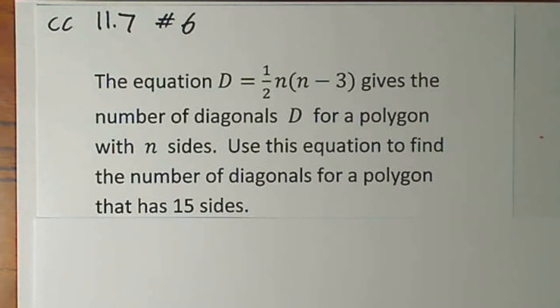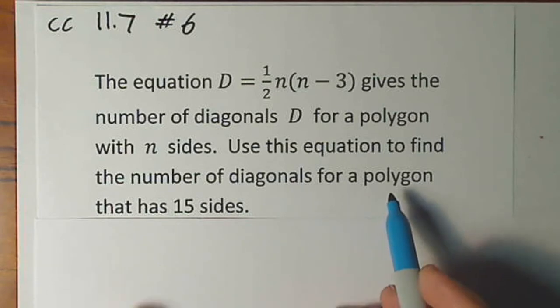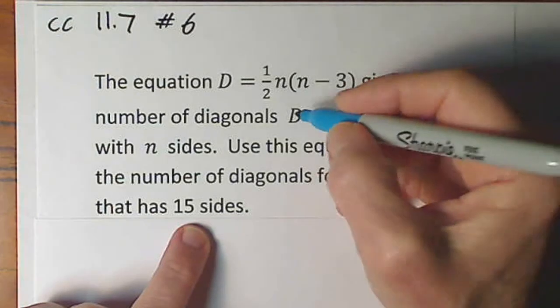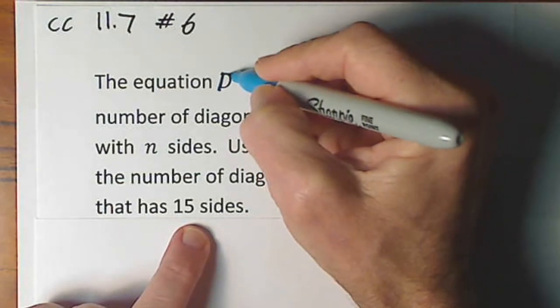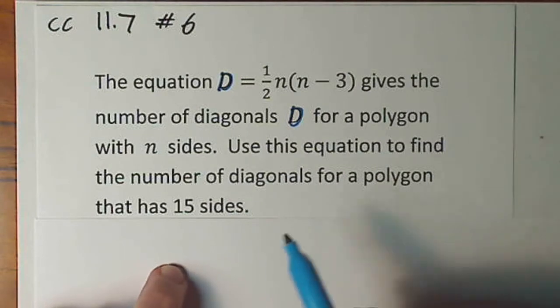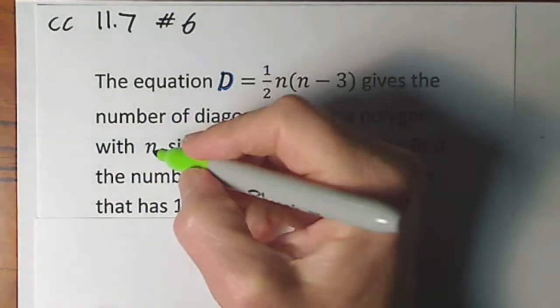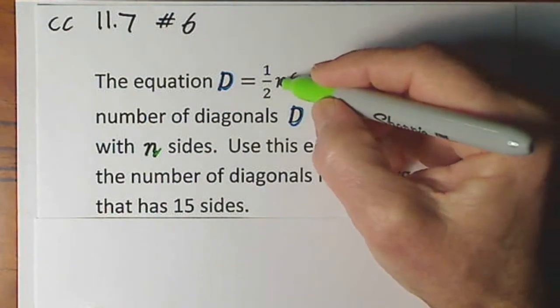All right, we're asked to find the number of diagonals for a polygon that has 15 sides. The number of diagonals D is given by this formula. They've told us that the variable n refers to the number of sides.